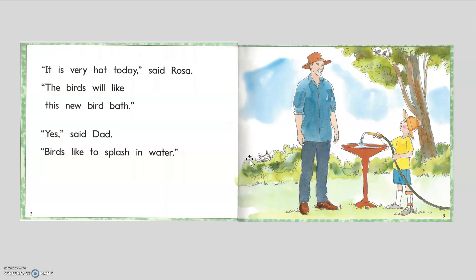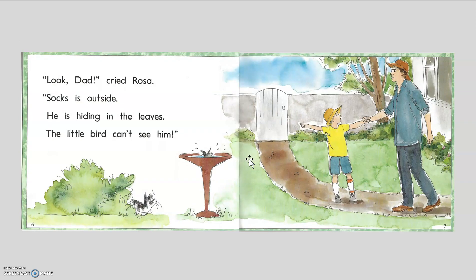It was a hot day, and what did Rosa want to do? She wants to fill up the birdbath for the birds. But then what happened? Who's checking out those birds? Socks — naughty Socks. He sees those birds, and what do you think he might do? He might try to jump in that birdbath.